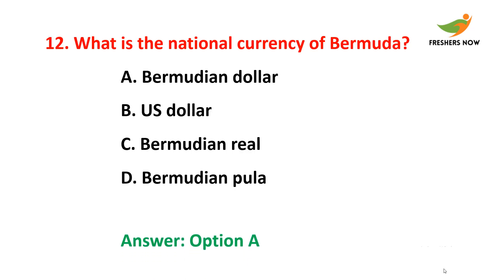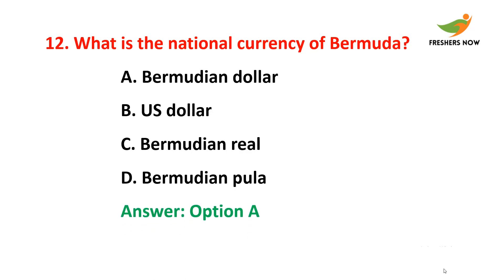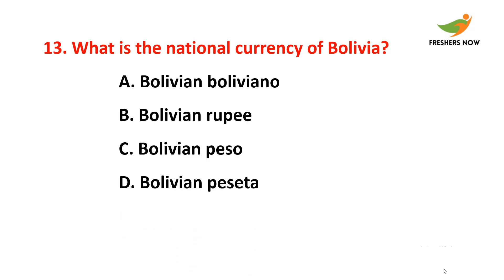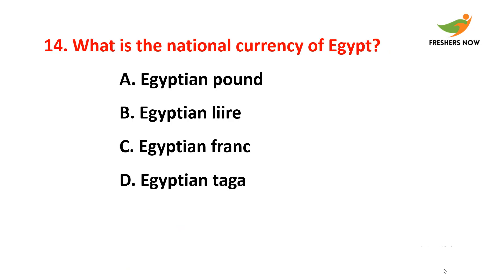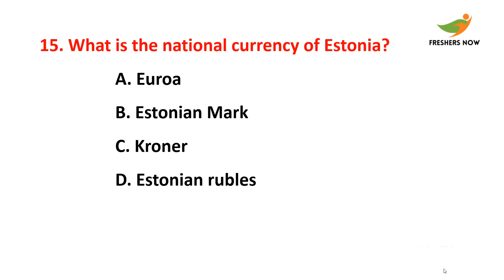Twelfth question: What is the national currency of Bermuda? The answer is option A — Bermudian dollar. Thirteenth question: What is the national currency of Bolivia? The answer is option A — Bolivian boliviano. Fourteenth question: What is the national currency of Egypt? The answer is option A — Egyptian pound.